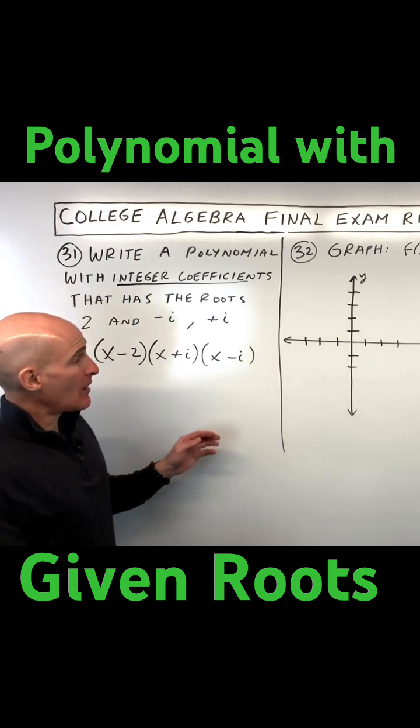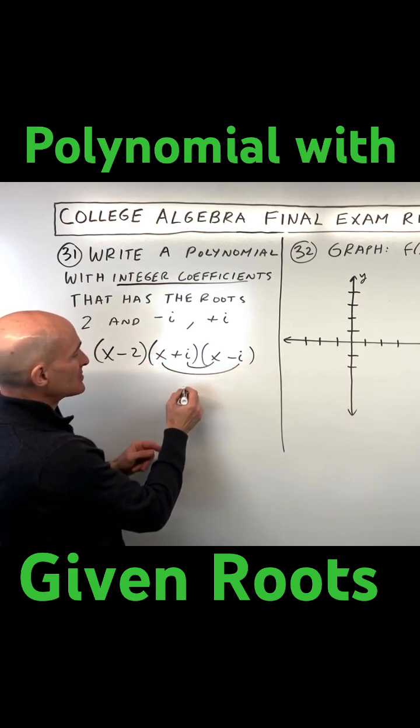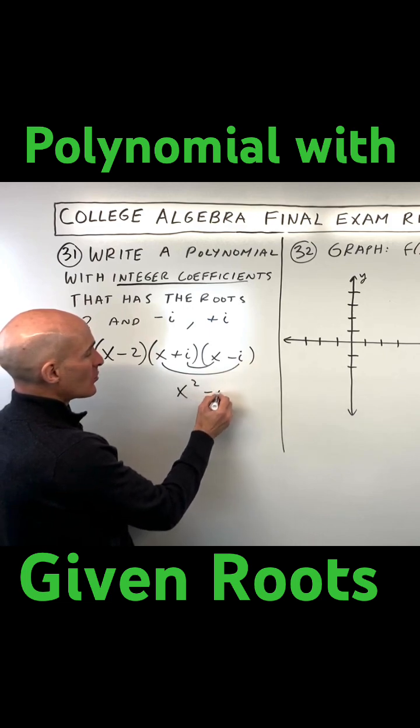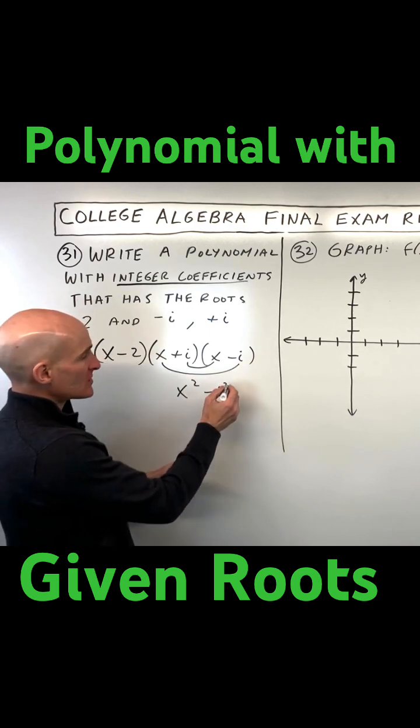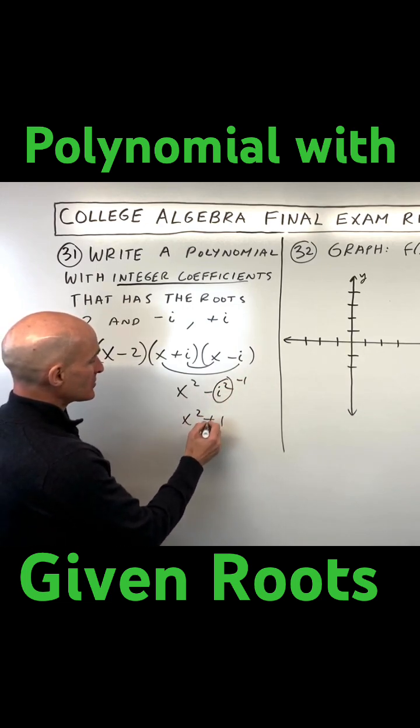Now what you can do is, I'd probably FOIL these together here first because you can see the inside and outside are going to cancel. This is going to give us x squared, and this is going to give us negative i squared. But we know i squared is negative 1, times a negative is positive 1. So we have x squared plus 1.